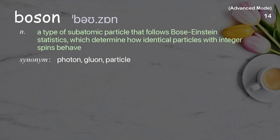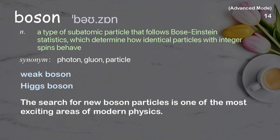Boson: A type of subatomic particle that follows Bose-Einstein statistics, which determine how identical particles with integer spins behave. Examples: weak boson, Higgs boson. The search for new boson particles is one of the most exciting areas of modern physics.